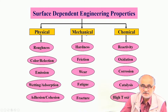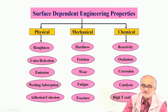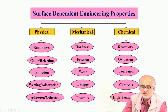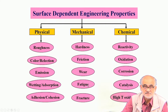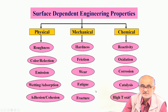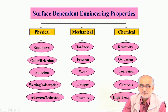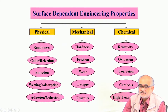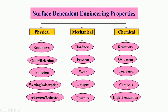When mechanical deformation or activation is applied, the responses include hardness, friction, wear, fatigue, and fracture. Fracture and fatigue are not entirely surface dependent properties, but failure from these two classes essentially initiates at the surface. Chemical properties — namely reactivity, oxidation, corrosion, catalysis, and high-temperature oxidation — are also essentially surface dependent properties.